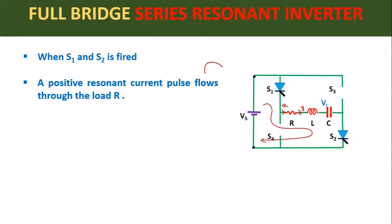Current pointing towards the right hand side is taken as positive, so we name it a positive resonant current pulse. We get this type of waveform because there is formation of an RLC underdamped resonant circuit, therefore the currents flowing in this circuit will be in the form of pulses only. The source current IS at S1 will also be in the form of a pulse, and the load current will also be a pulse. The load voltage will be positive at point X and negative at point Y.